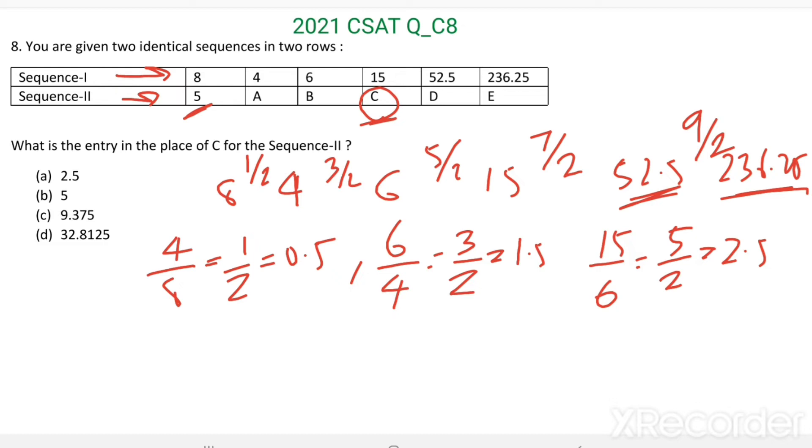Sequence 2 also follows the same pattern. Then we can say A/5 equals 1/2. From here, A equals 5/2.